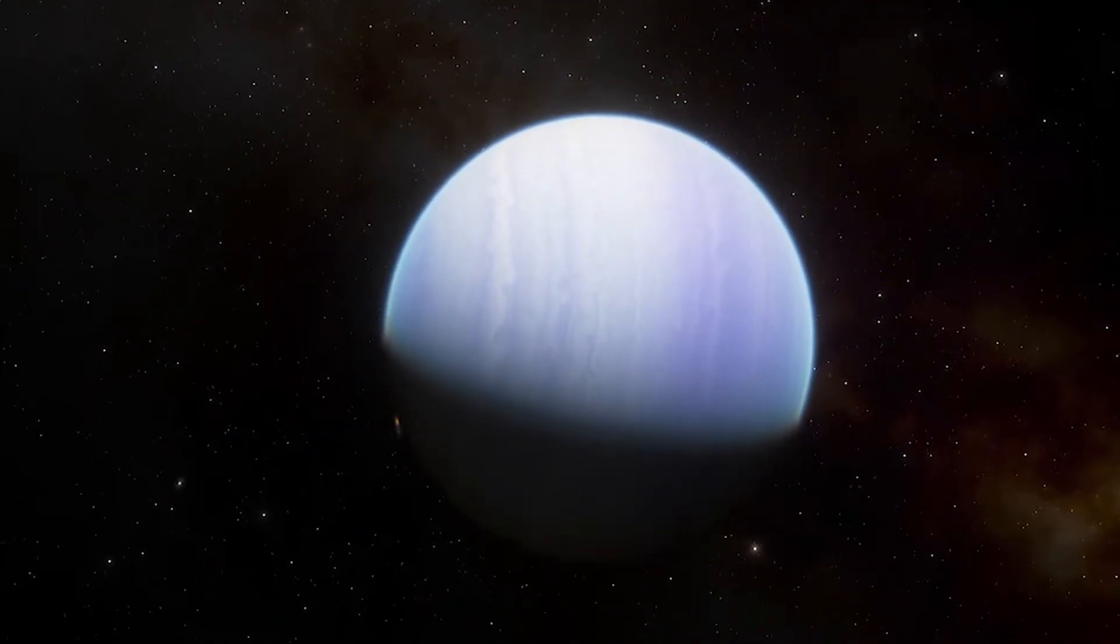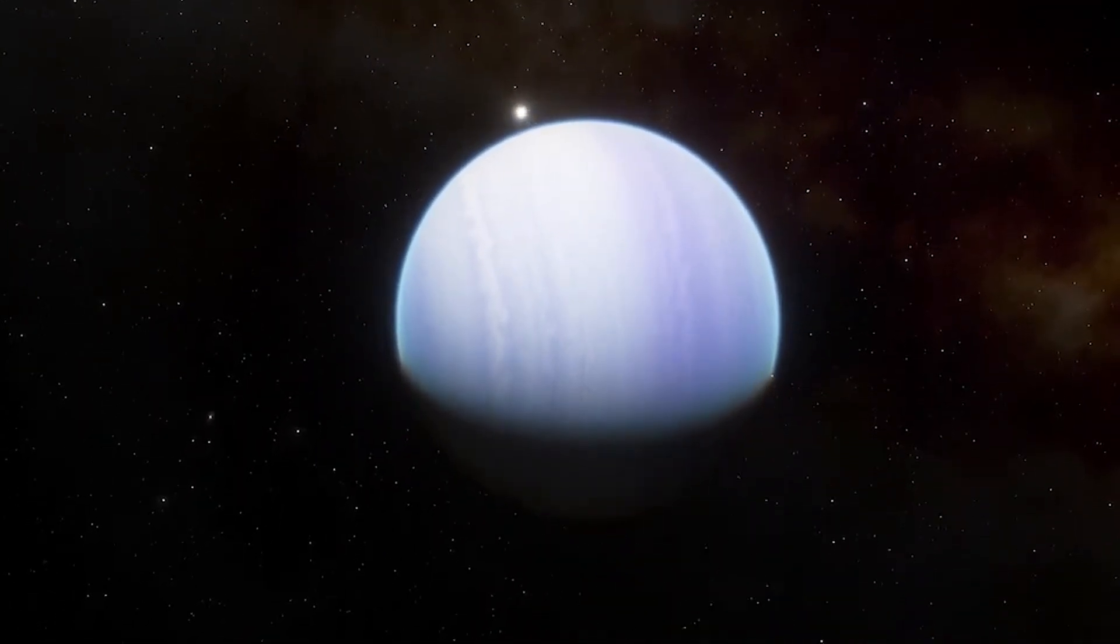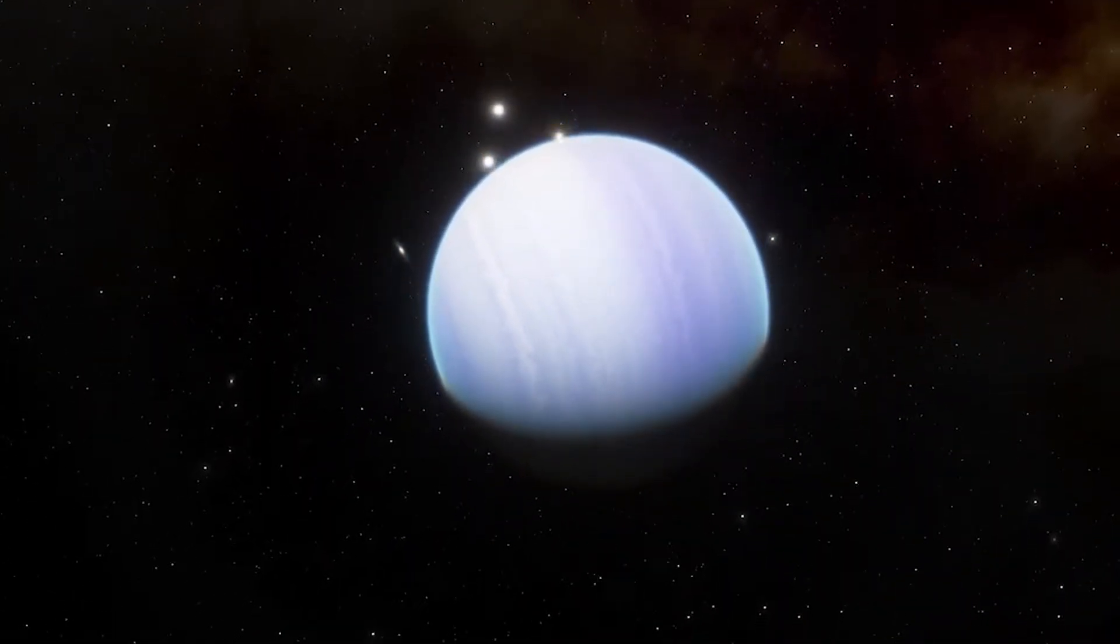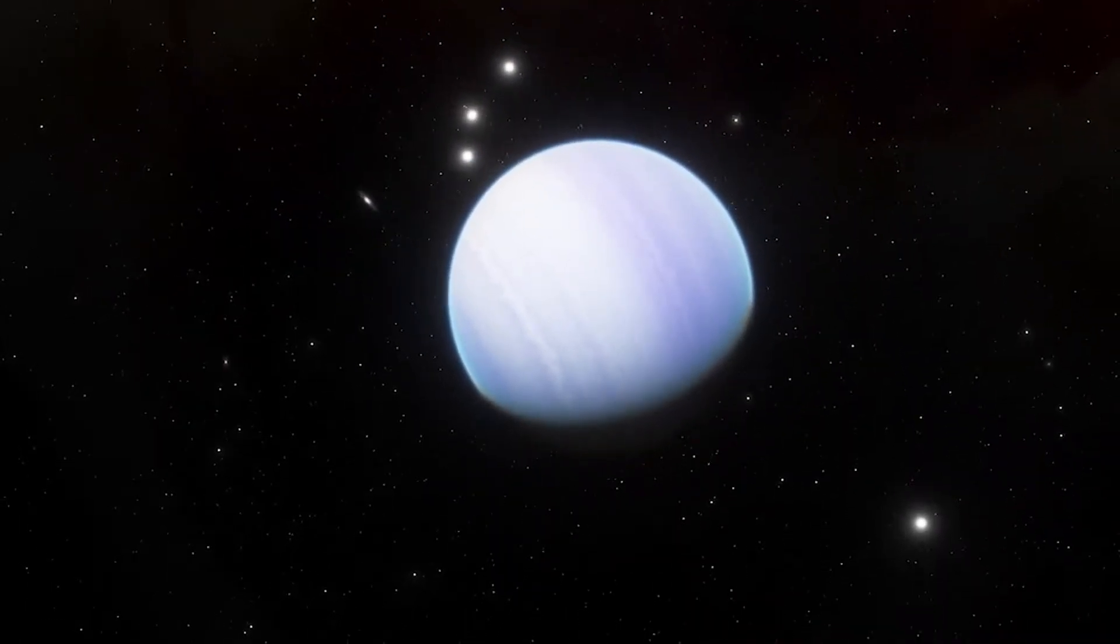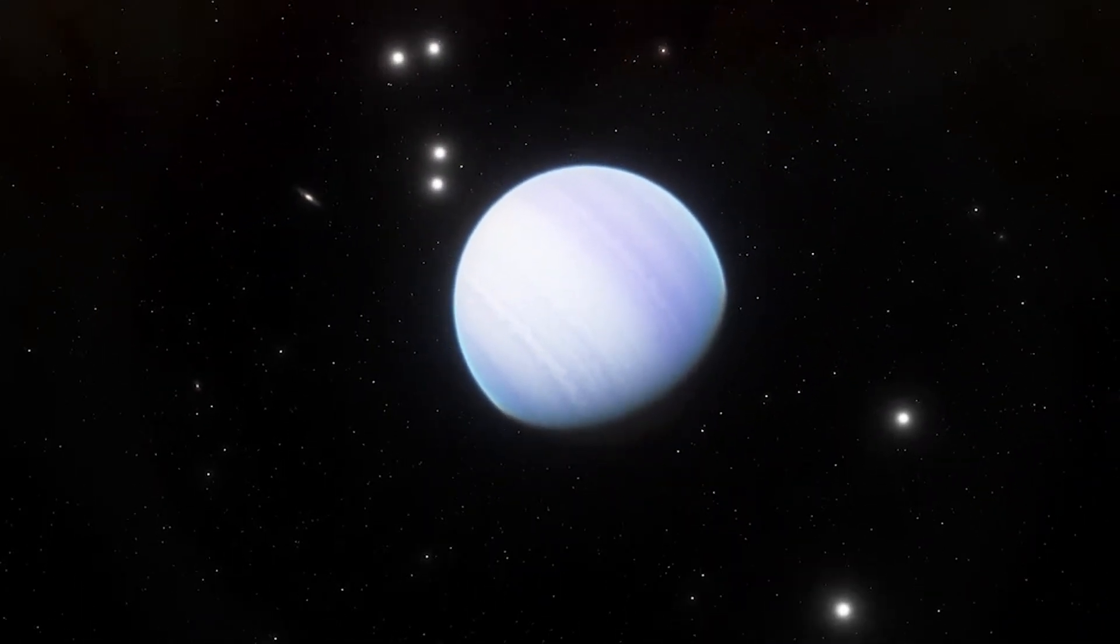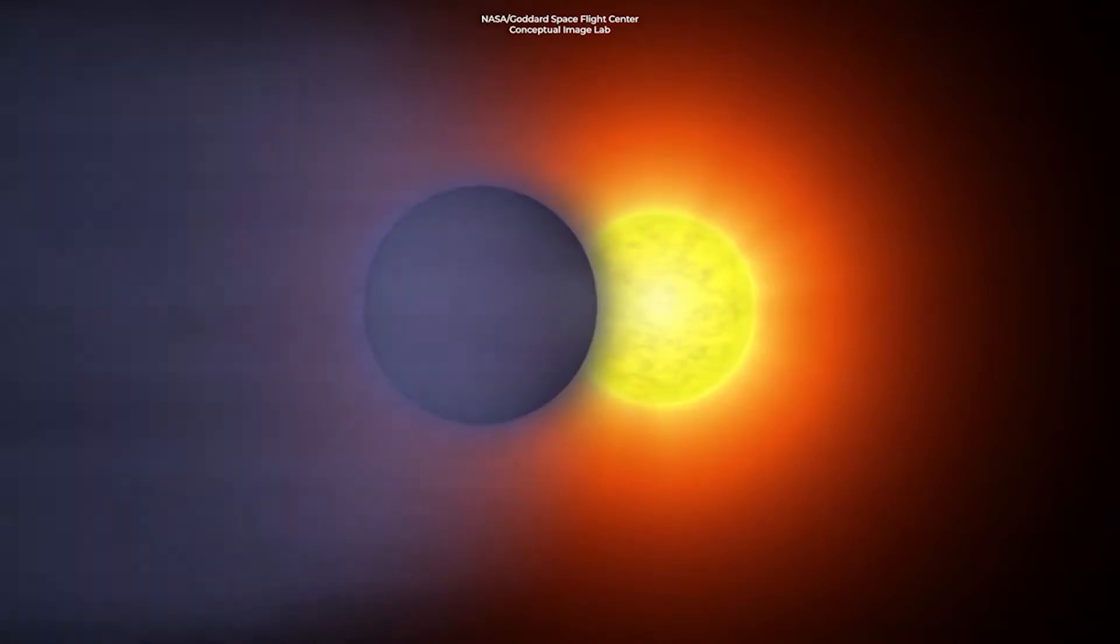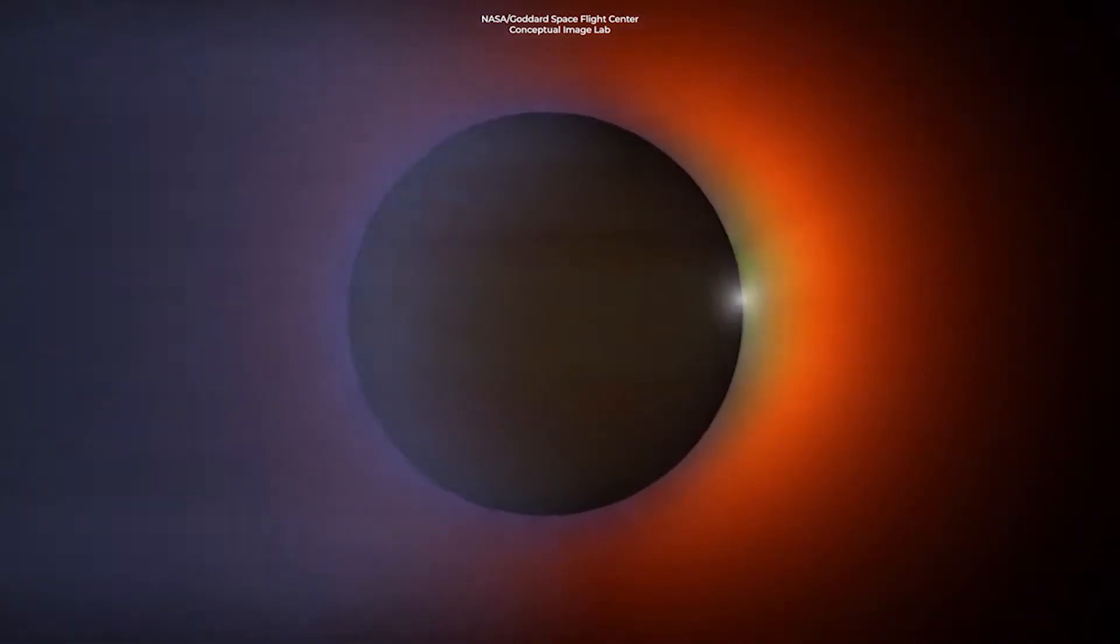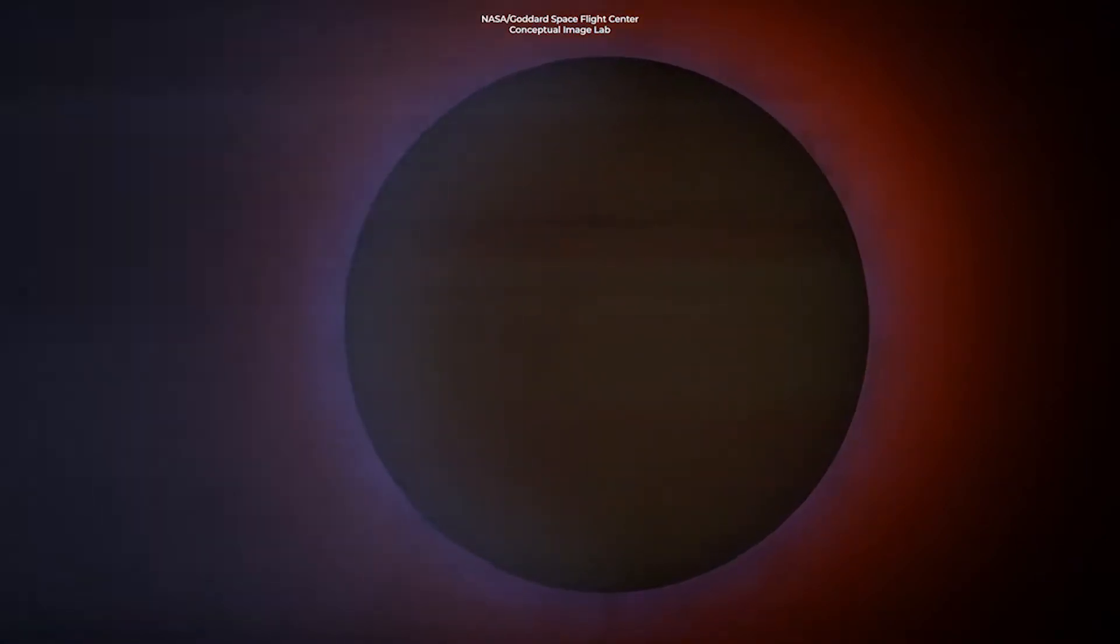HD 189773b is also the first exoplanet that scientists have been able to confirm the color of. The planet was determined to be blue, much like Earth. Though this exoplanet's color comes from light refraction through silicate particles in the air, which due to the planet's heat, may condense into glass.